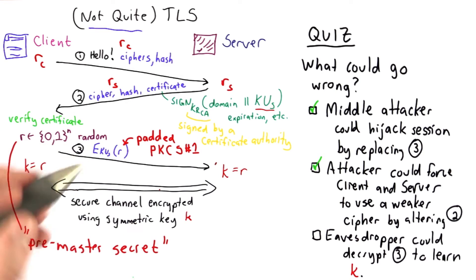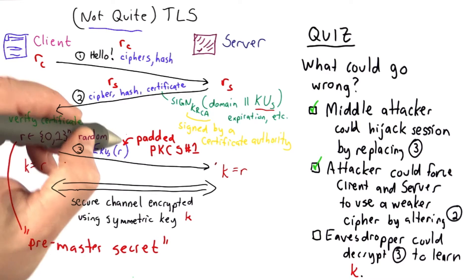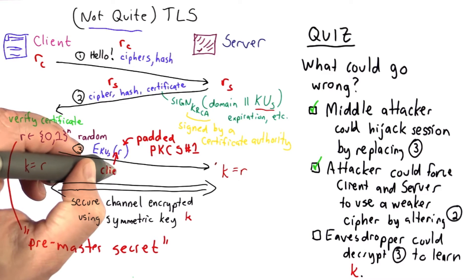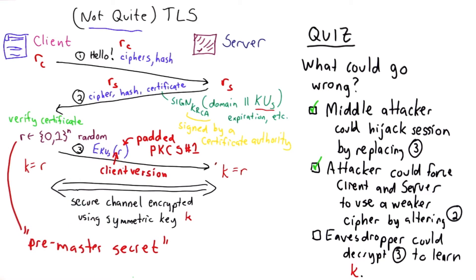If this were some other cipher, we could use a different way of padding it. We're also going to add to r something about the client version, and this will be useful for verifying that the previous steps have not been tampered with.